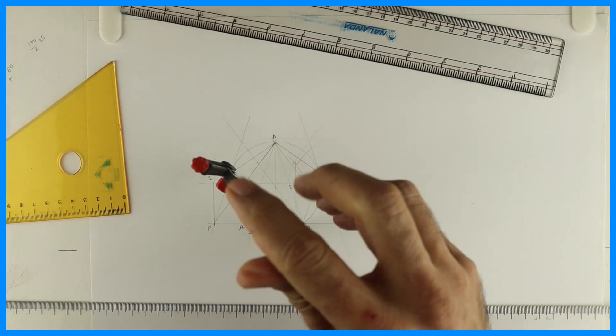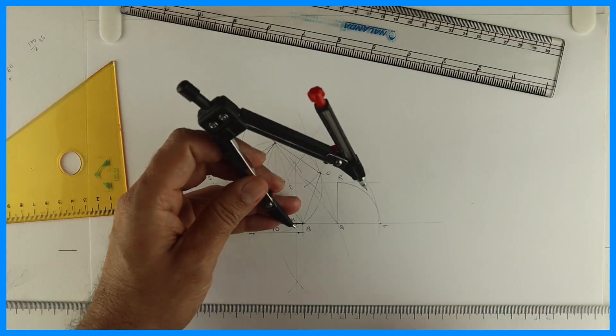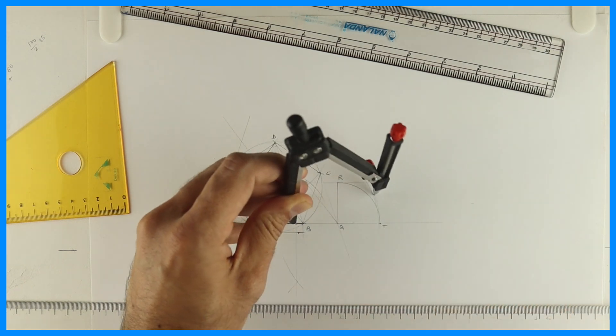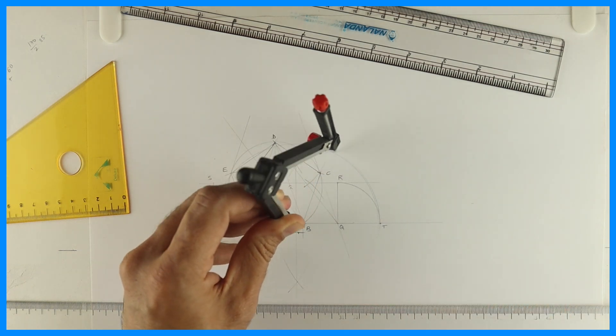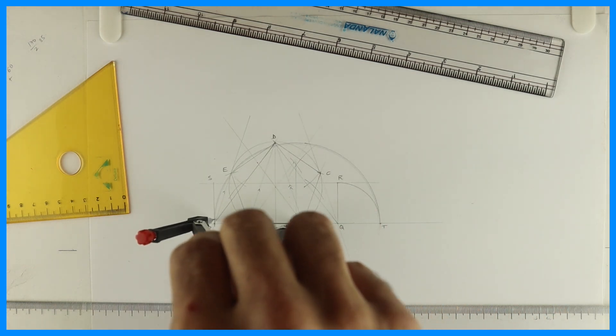Now take M to P and draw arc, see this. M to T, or M to P it will be same, draw arc, semicircle.